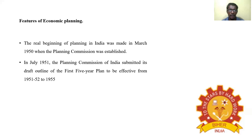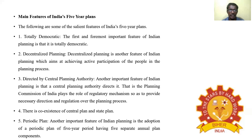The real beginning of planning in India was made in March 1950 when the Planning Commission was established. In July 1951, the Planning Commission of India submitted its draft outline of the first Five-Year Plan, to be effective from 1951–52 to 1955. The following are some of the salient features of India's Five-Year Plans.